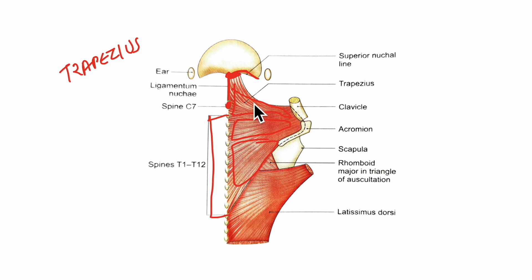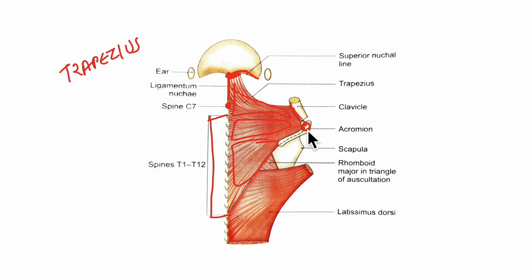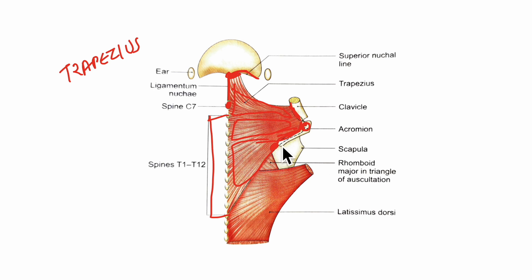The upper fibers insert into the posterior border of the lateral one-third of the clavicle bone. Looking at the middle fibers, here you can see the scapula bone, the spine of the scapula and the acromion process — the middle fibers insert into the medial margin of the acromion and also to the upper lip of the crest of the spine of the scapula. Moving on to the lower fibers of the trapezius, it inserts into the apex of the triangular area at the medial end of the spine of the scapula.